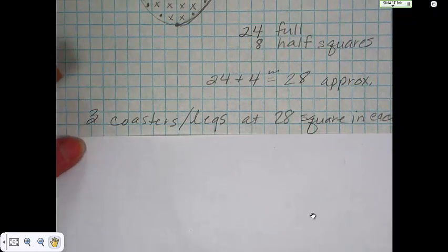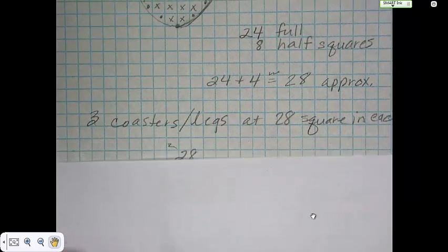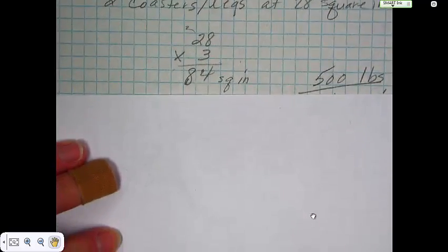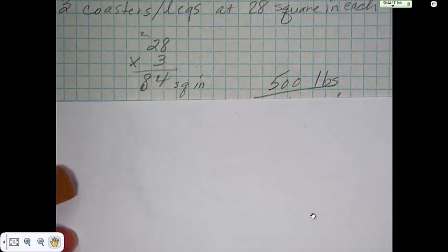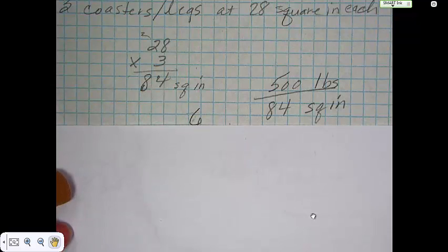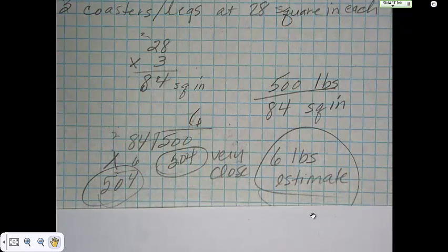So three casters, legs at 28 square inches each. Three times 28 is 84. Then you use Tucker's theorem. You take the 500 pounds and divide it by the 84 square inches. And you do the math. And you end up with approximately...